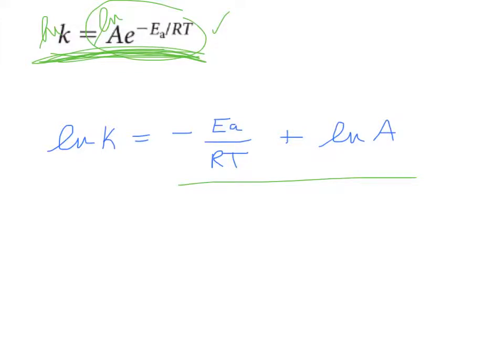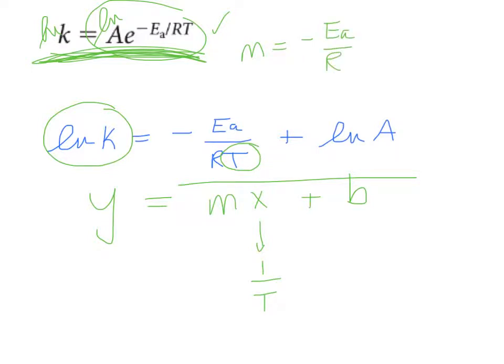So why did I do this? Well, I did it because now Y equals MX plus B. ln k is our Y. One over temperature, one over the temperature is our X. So what's our slope equal to? Our slope equals minus EA over R. EA is our activation energy, and that has to be in joules per mole.